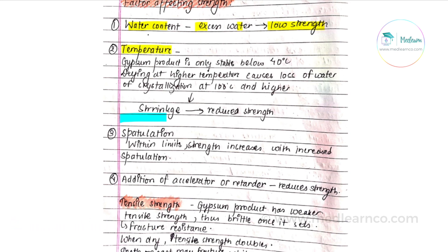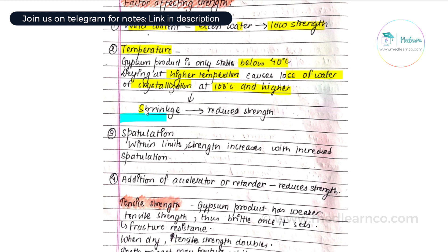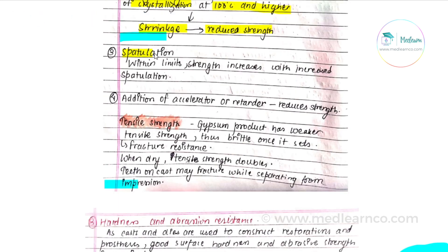Regarding temperature effects on strength: gypsum product is stable only below 40°C. If drying is done at higher temperatures, it causes loss of water of crystallization. At 100°C or higher temperature during drying, there is loss of water of crystallization, causing shrinkage and reduction in strength.